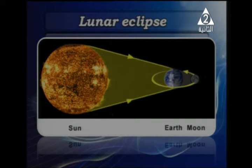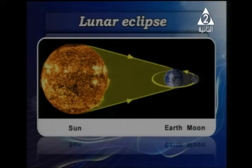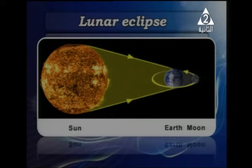During a total lunar eclipse, the Earth completely covers the phase of the Moon. This happens in the middle of the lunar month, and a lunar eclipse occurs approximately two times per year.